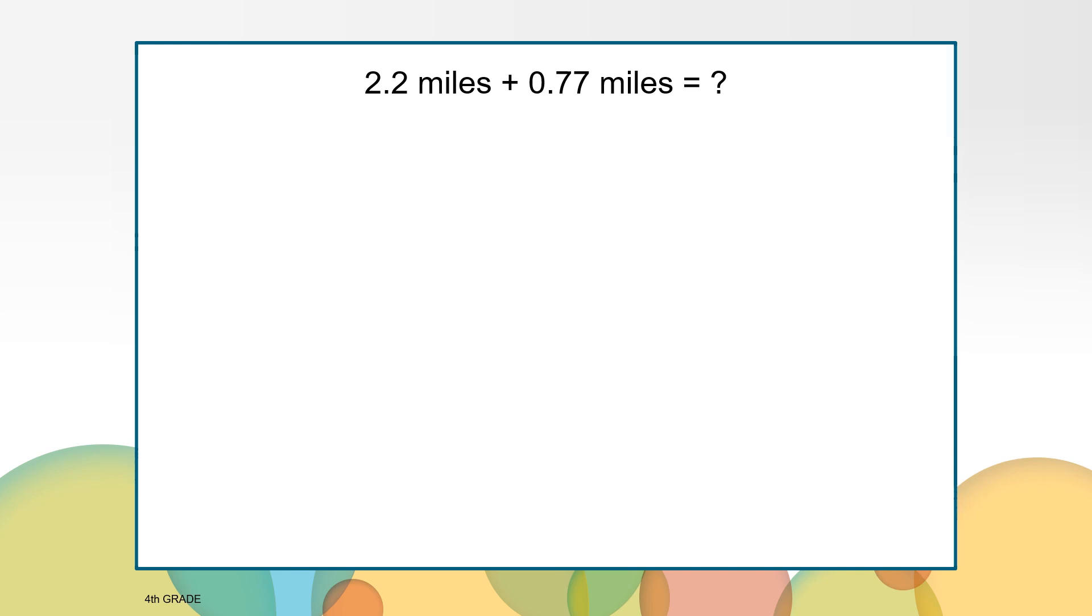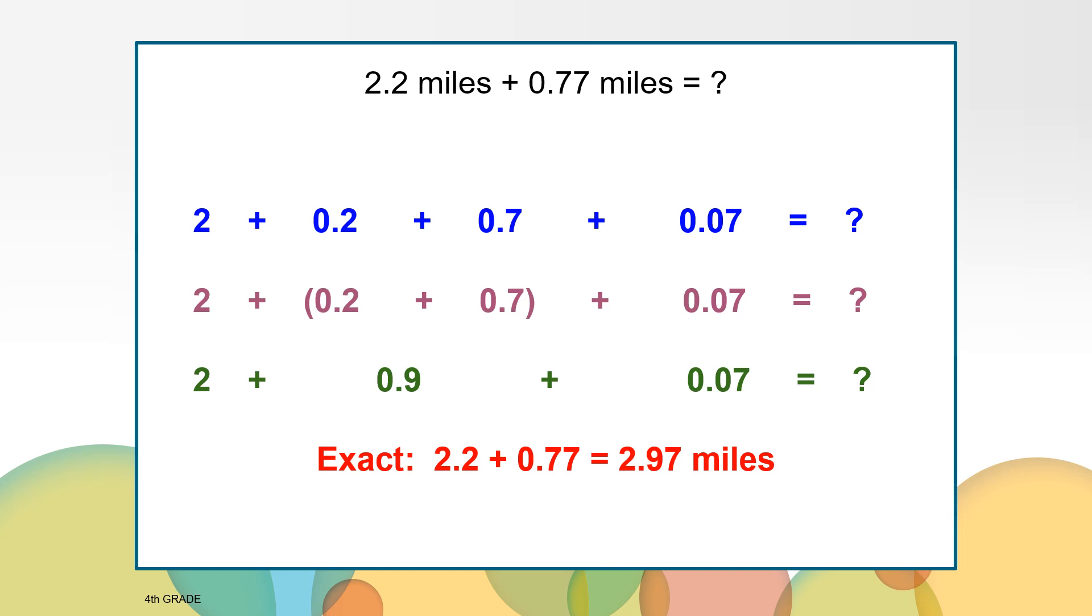When we decompose these two addends, we have a new number sentence: 2 plus 2 tenths plus 7 tenths plus 7 hundredths. We can combine the tenths together to see that we now have 2 plus 9 tenths plus 7 hundredths. That gives us an exact answer of 2 and 97 hundredths miles.